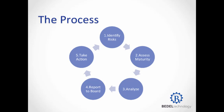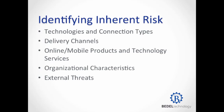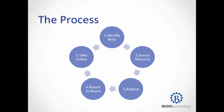The process ties in to each of those objectives. First, we're going to identify our inherent risk. Two, we're going to assess our maturity level. Three, we're going to analyze that information - our current risk, our current maturity level, our target maturity level, and decide what actions we need to bridge that gap. Four, we're going to report those actions and findings to the board of directors. Five, we're going to take action - implement the things we committed to the board. And the sixth step, which isn't listed, is we're going to repeat the process.